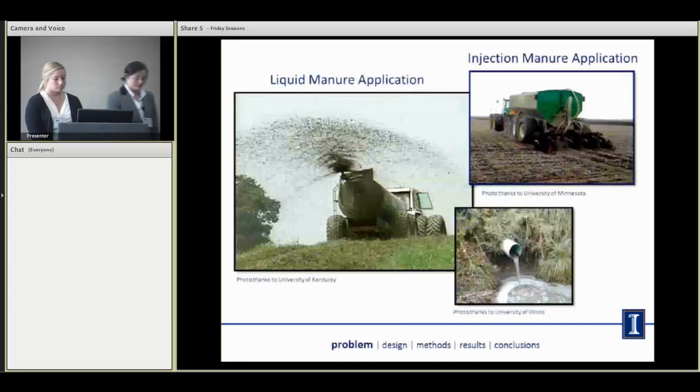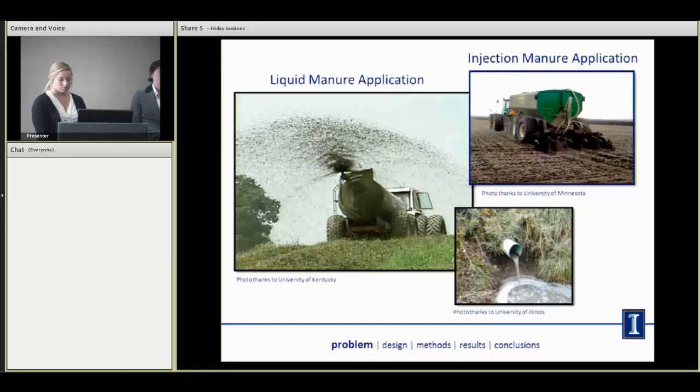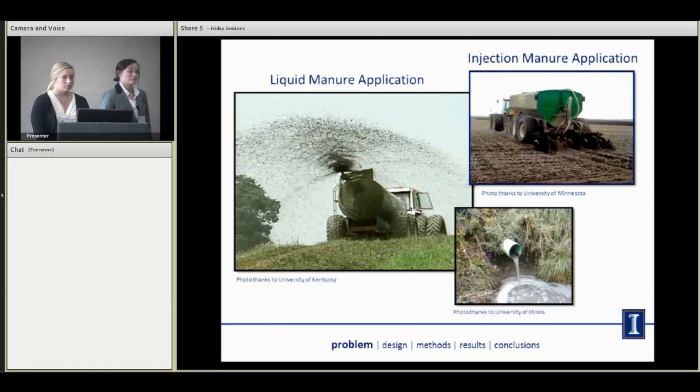So this is what we're trying to prevent. Obviously liquid manure is a valuable source of nutrients, and there's this potential for it to move through these macro pores, wormholes, and root channels to surface waters. There are a lot of management practices that producers already use to prevent this, but we think that a filter would be an added level of risk reduction.